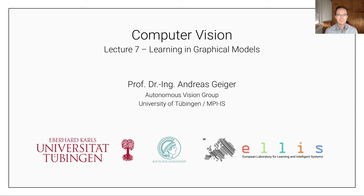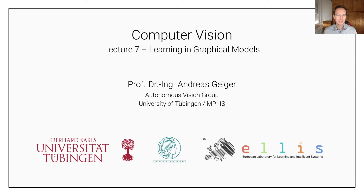Welcome to computer vision lecture number seven. This is the last lecture in this little excursion on graphical models. In lecture five we introduced graphical models and a very basic inference algorithm, the belief propagation algorithm for inferring marginal or maximum a posteriori solutions. In lecture six we then saw some applications of graphical models and how we can incorporate prior knowledge about the problem into the model.